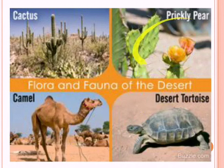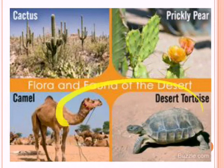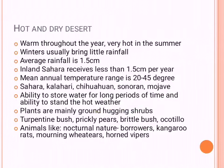Prickly pear cactus, floral camel, and desert tortoise are some animals and plants in the desert ecosystem. For hot and dry deserts: they are warm throughout the year and very hot in summer. Very little rainfall — like 1.5 centimeters per year, just some drizzles. Inland Sahara has even less than drizzles. Saharan, Kalahari, Chihuahuan, Sonoran, and Mojave all have these hot and dry desert conditions.